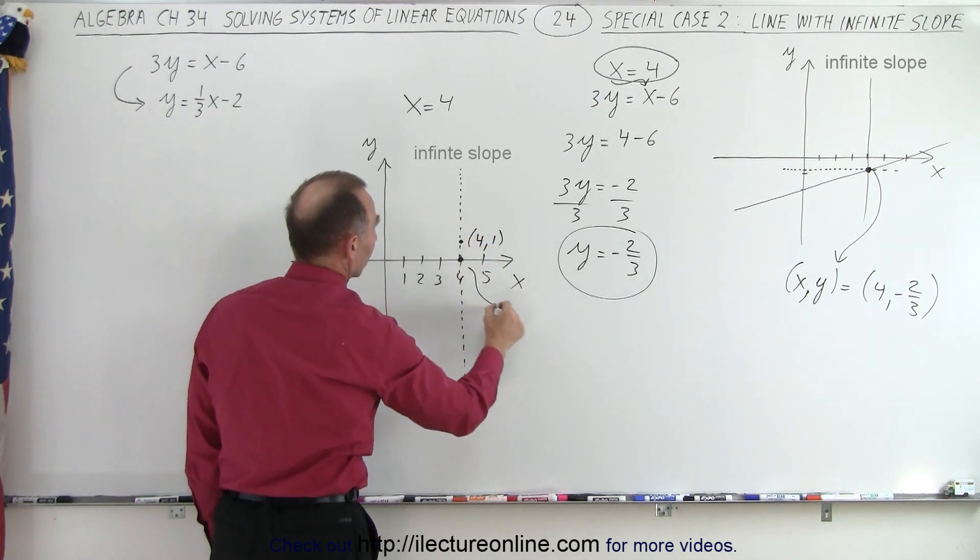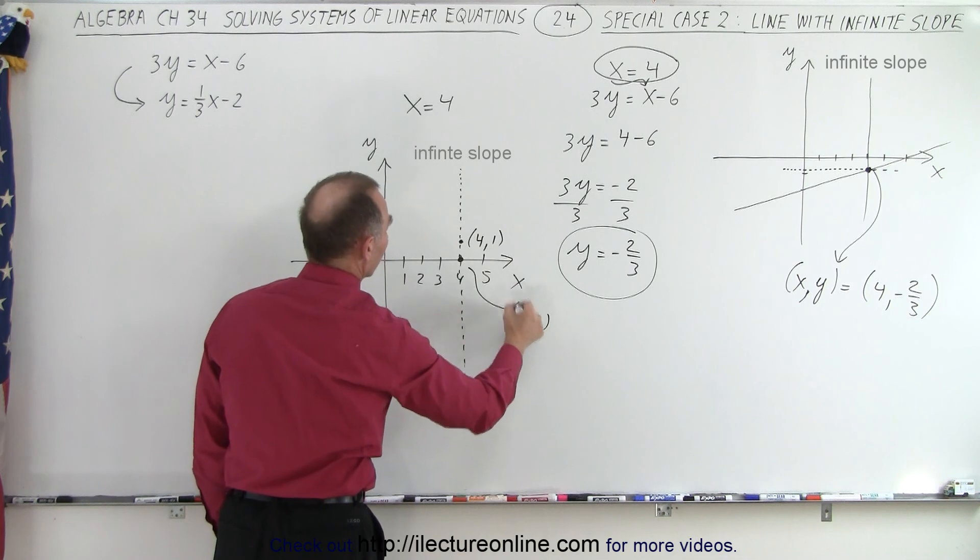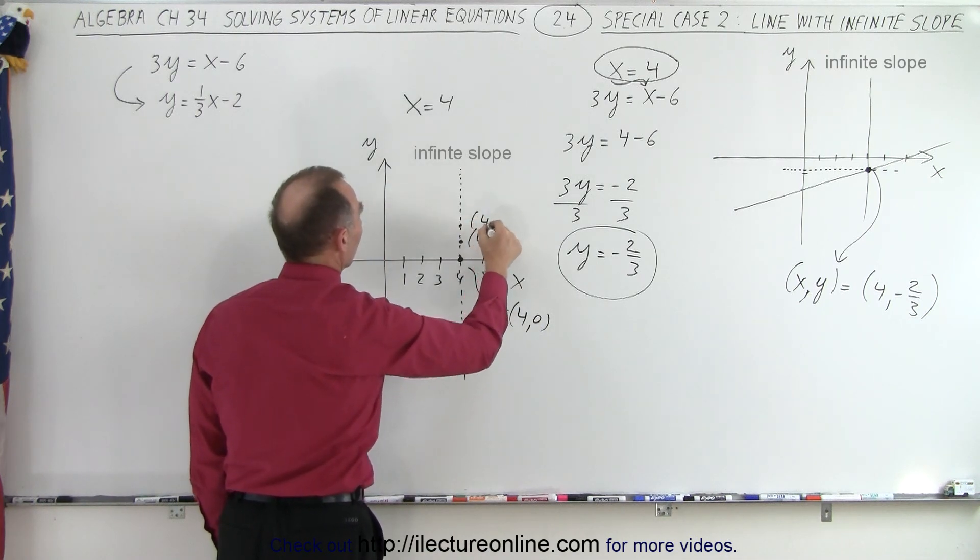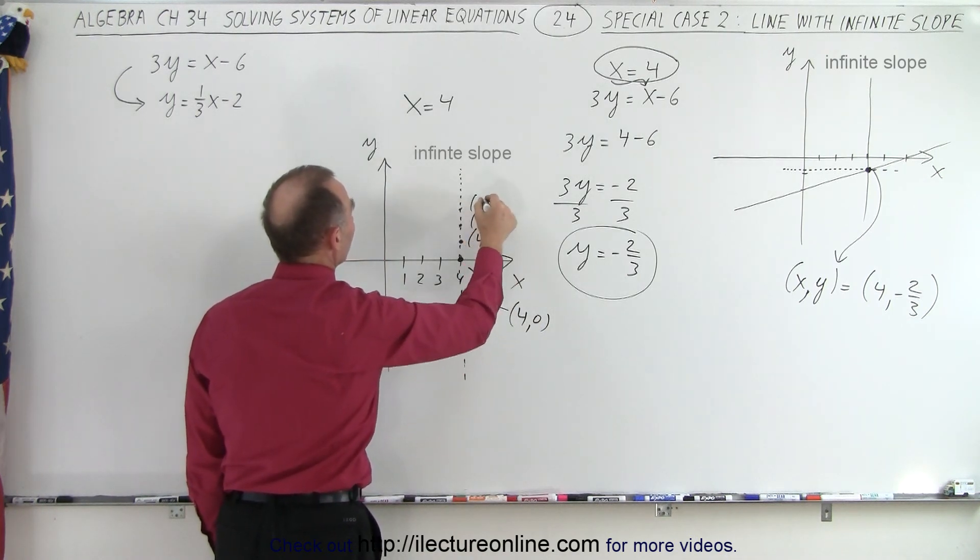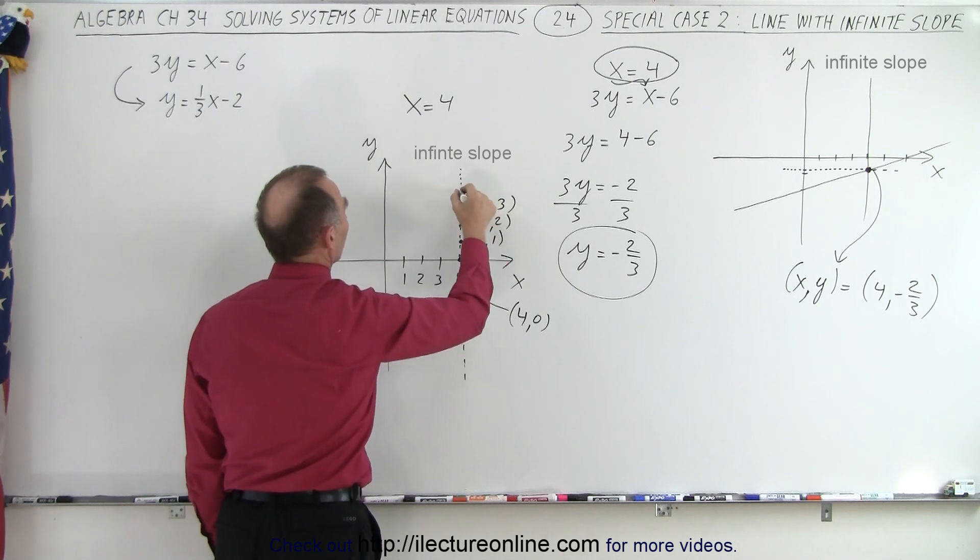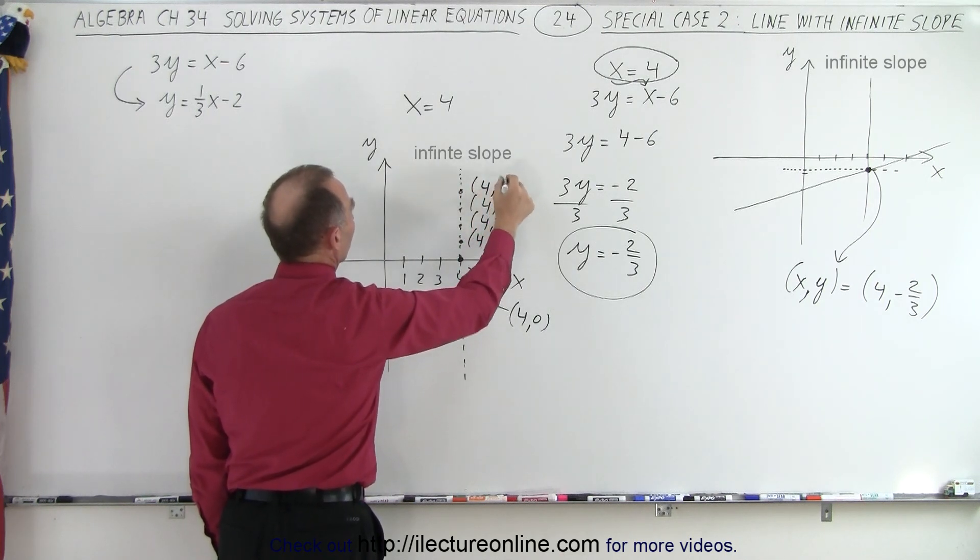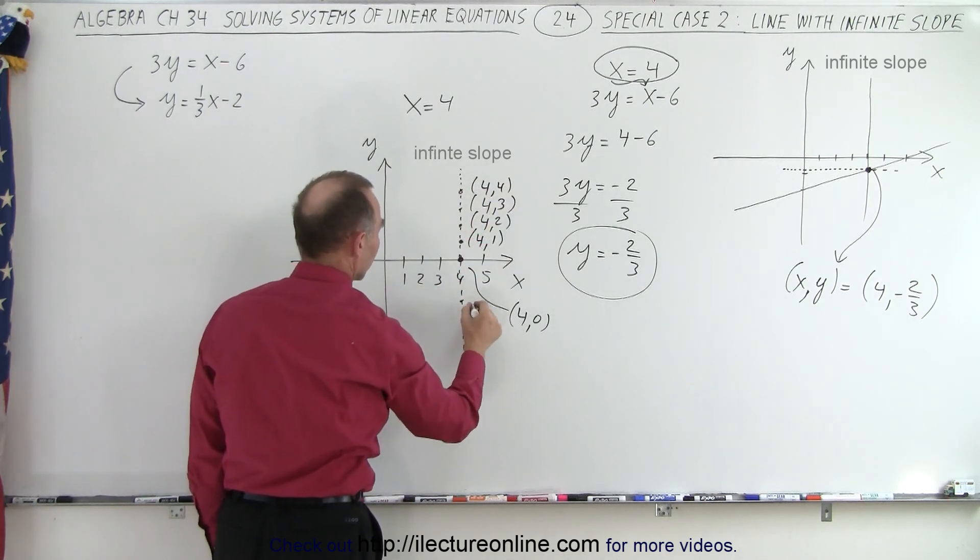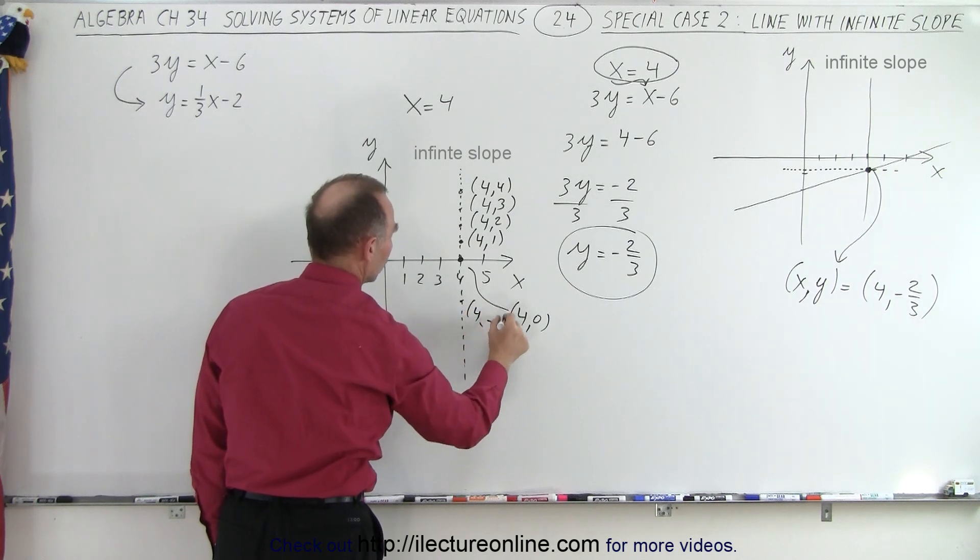This point here would be 4 and 0. This point right here would be 4 and 2. Here that would be 4 and 3. And this point right here would be 4 and 4. The point over here would be, let's say, 4 and negative 2.